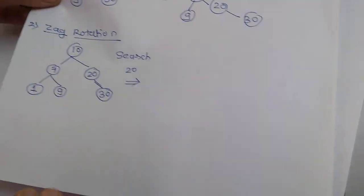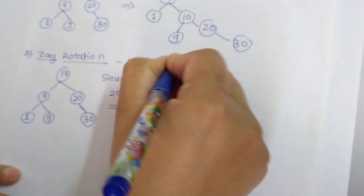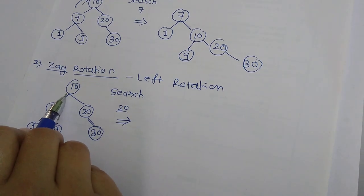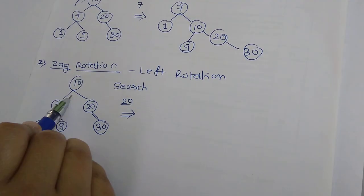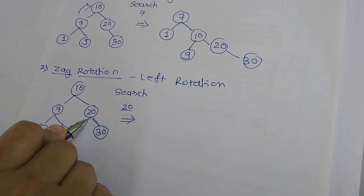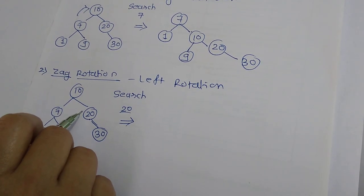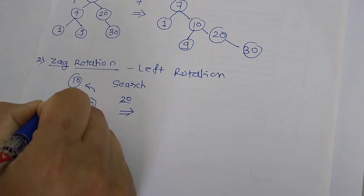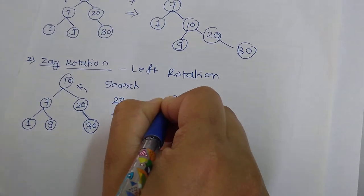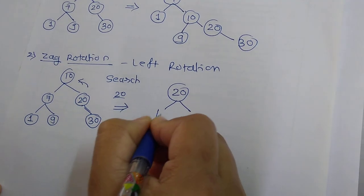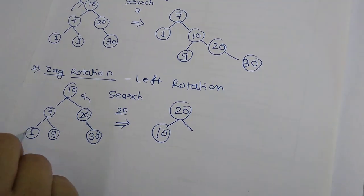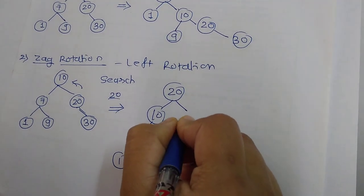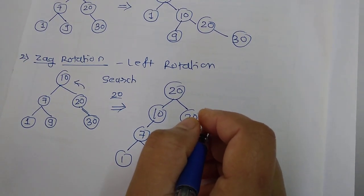Next is the zag rotation, which we can also call a left rotation. Search 20 here. Comparing with root 10: 20 is greater than 10, so it will appear in the right subtree of 10. I find the position of 20 — searching operation completed. Now we perform the splaying. Since 20 is to the right of the root, I rotate it to the left. So 20 will be the root. Left of 20 will be 10, and the left subtree with 7, 1, and 9 remains as is. The right of 20 will be 30. This is the zag rotation.